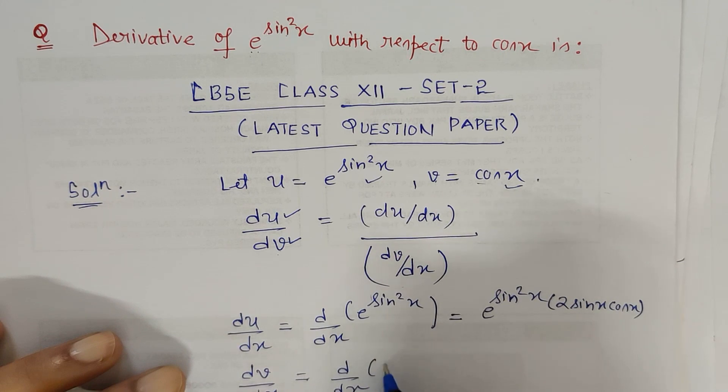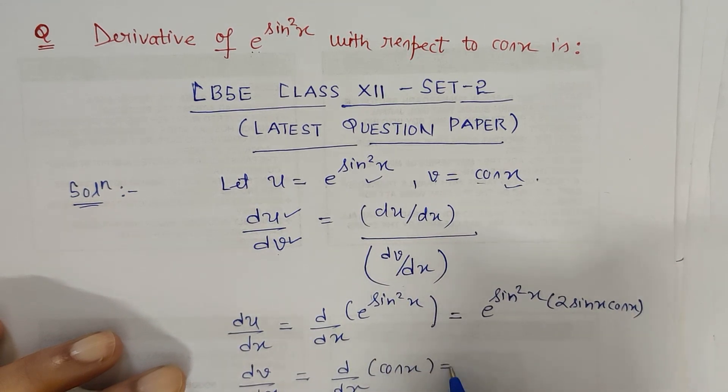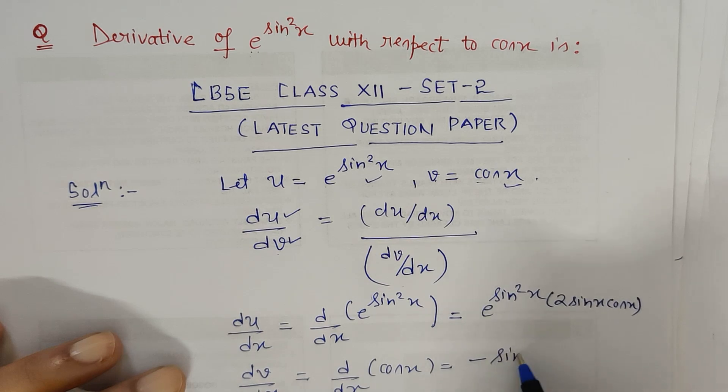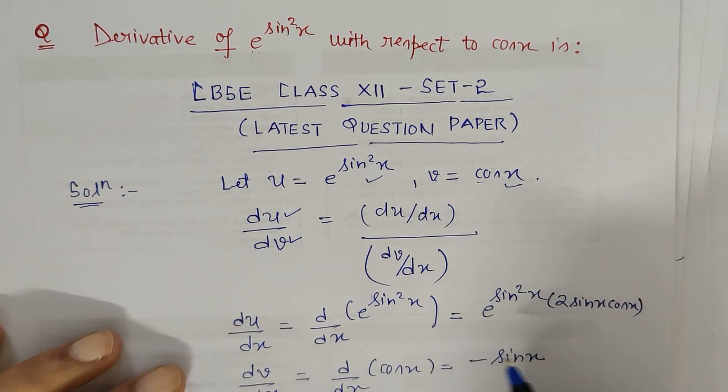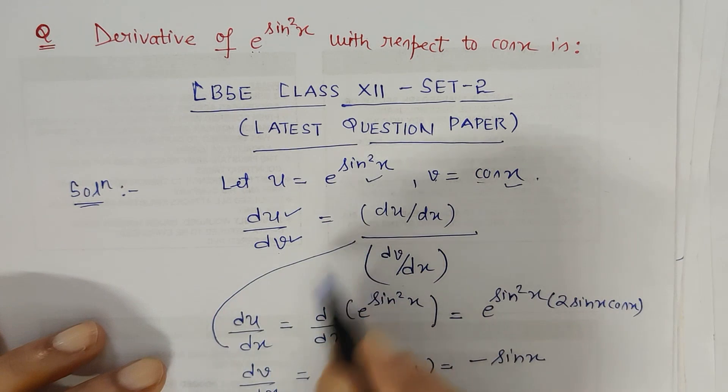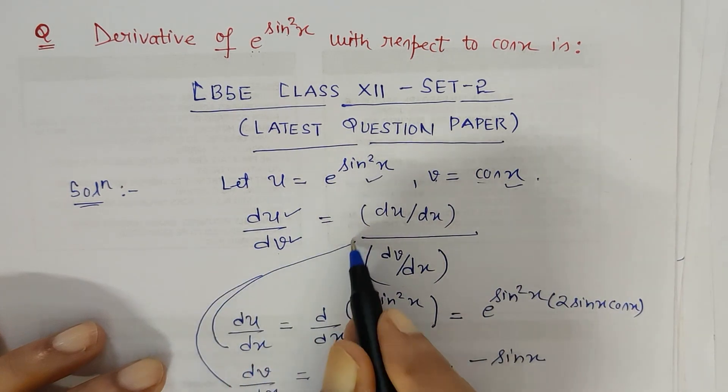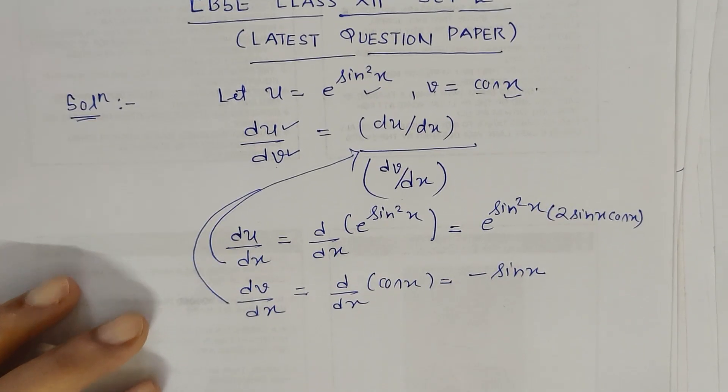Next is dv by dx, that is d upon dx of cos x. So derivative of cos x is minus sin x. Now we just have to substitute these two values in the above equation.